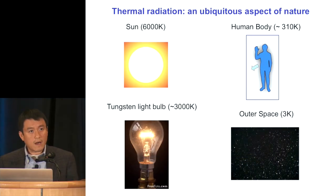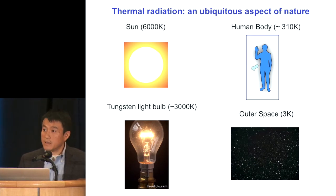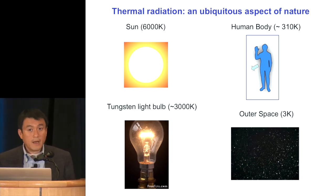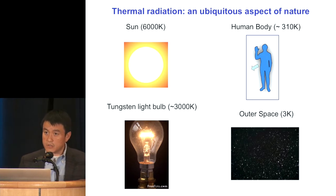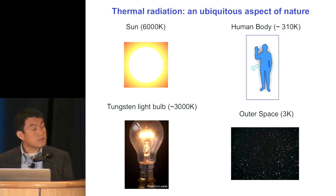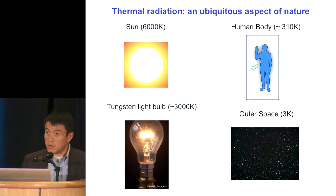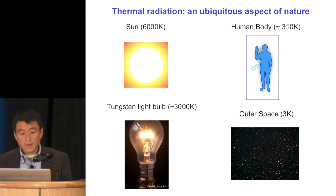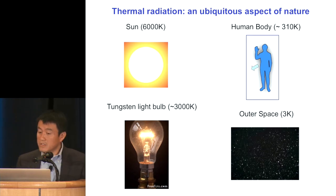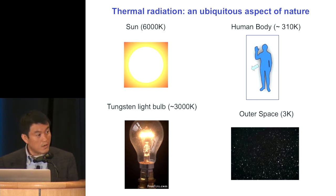It's probably not surprising, but worth reemphasizing that thermal radiation is really a ubiquitous aspect of nature. If you look around ourselves, you almost see everything emitting thermal radiation, and the characteristics of these radiations are determined by temperature. The sun, which we talk extensively about in this symposium, is a wonderful energy source because it has a fantastically high temperature of 6,000 Kelvin.